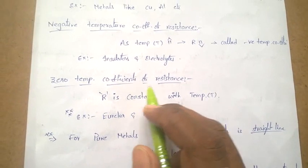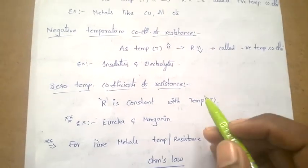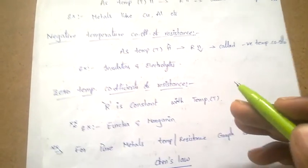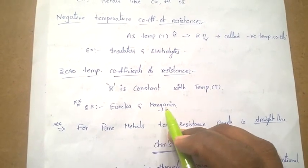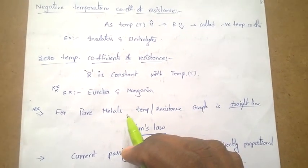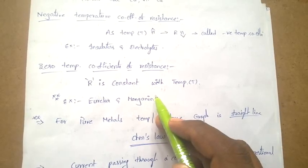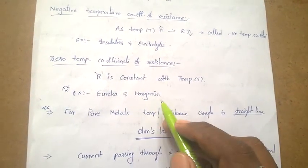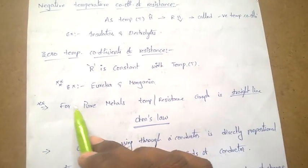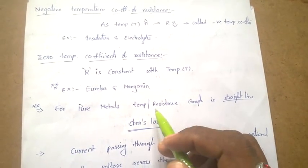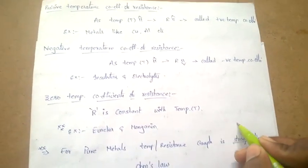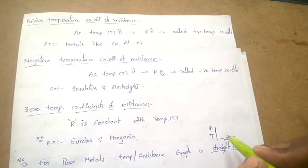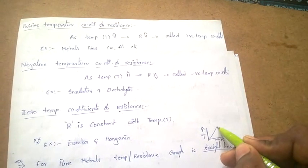Zero temperature coefficient of resistance means the resistance is constant with temperature — as temperature increases or decreases, resistance remains constant. Examples are Eureka and Manganine. One important bit: the zero temperature coefficient resistance materials are Manganine or Eureka. Another important bit: for pure metals, the temperature versus resistance graph is a straight line.